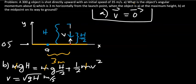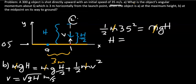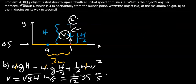To find H, compare the ground and maximum height: on the ground, ½m(35²) = mgH at the top. So gH = ½(35²), giving H = 35²/(2g) meters. Substituting back, the speed at the midpoint is (1/√2) × 35 m/s downward. The maximum height is 35²/(2g) meters.